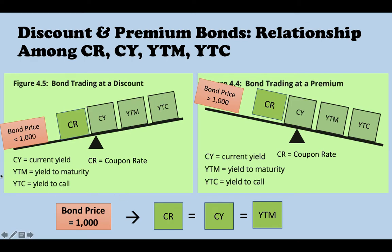However, if the bond's price is less than the par value, which means the bond is trading at a discount, you would expect the coupon rate is less than the current yield, less than the yield to maturity, less than the yield to call.